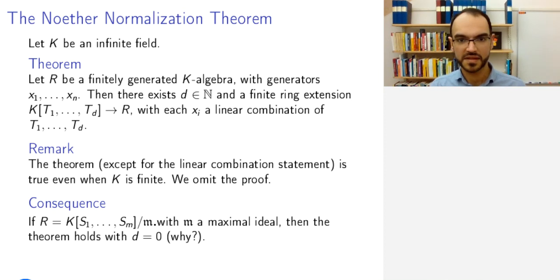So this satisfies the hypothesis of the theorem. It's a finitely generated K-algebra, and the generators now are called S1 to SM. And so therefore, there will exist D and the finite ring extension in this fashion. The claim is that D has to be 0. Pause and think why this must be the case.